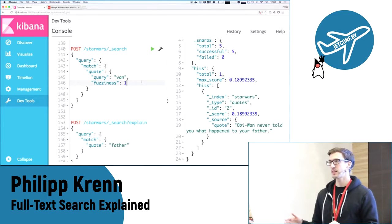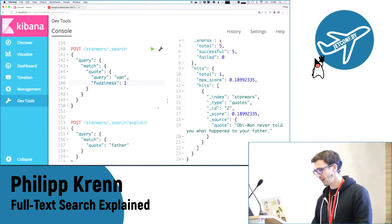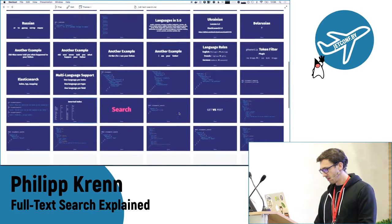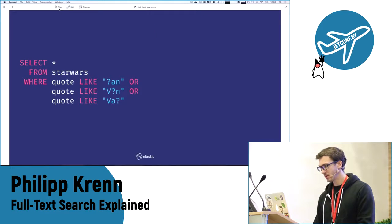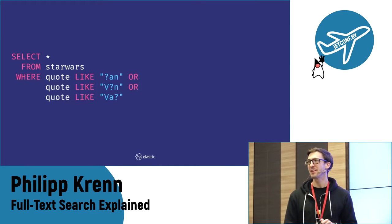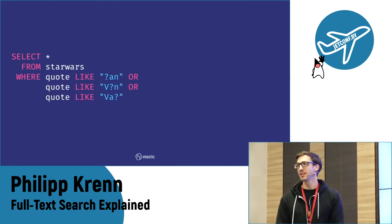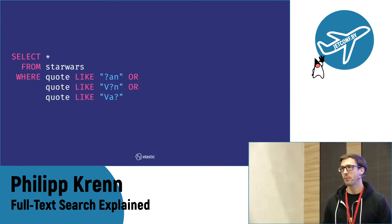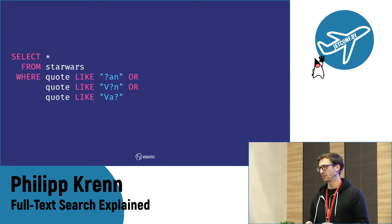You can always select auto-fuzziness and it will automatically pick that, or you can set the number of differences explicitly. For fuzziness in a relational database, you'd have to build combinations manually — that's not much fun for longer strings. And with a wildcard at the beginning, it doesn't use the index, so it becomes very slow. What Elasticsearch does with fuzziness is just brute-force all the possible combinations.